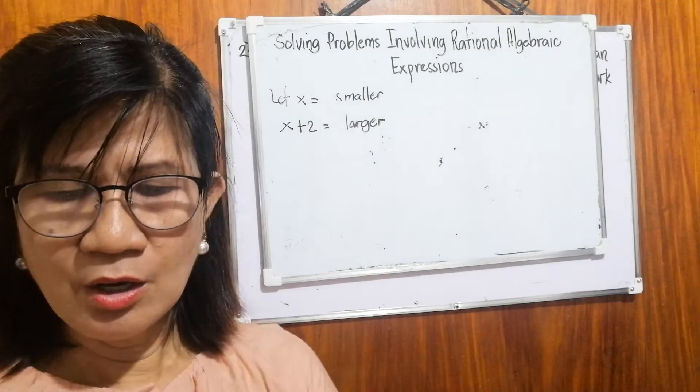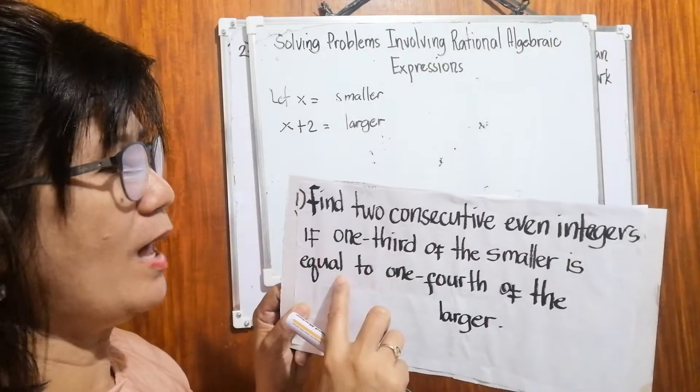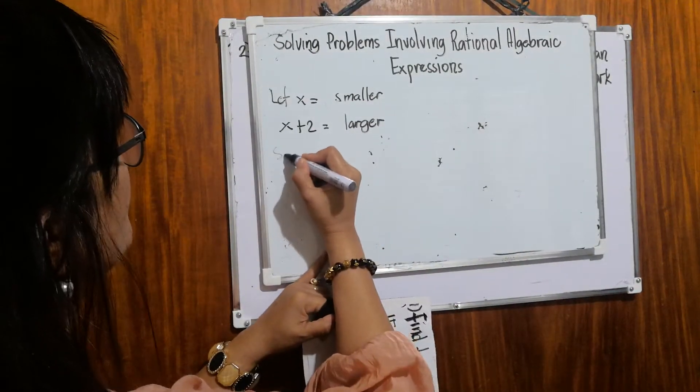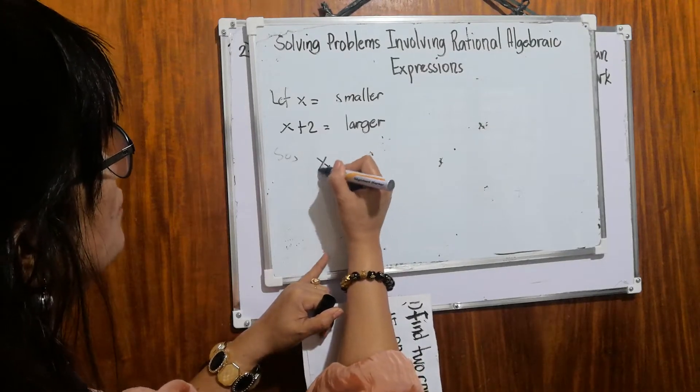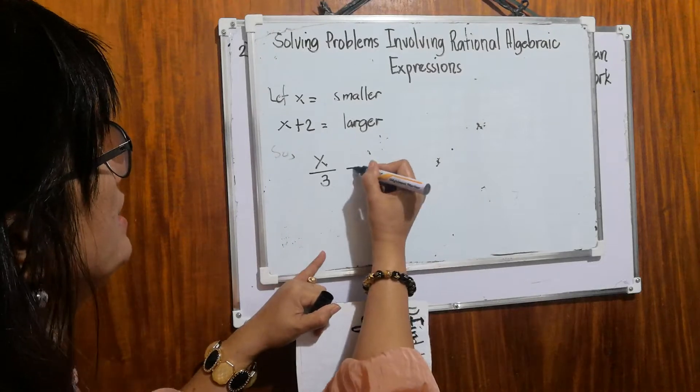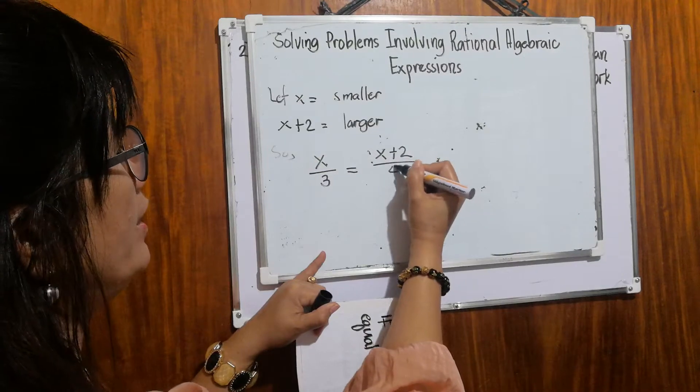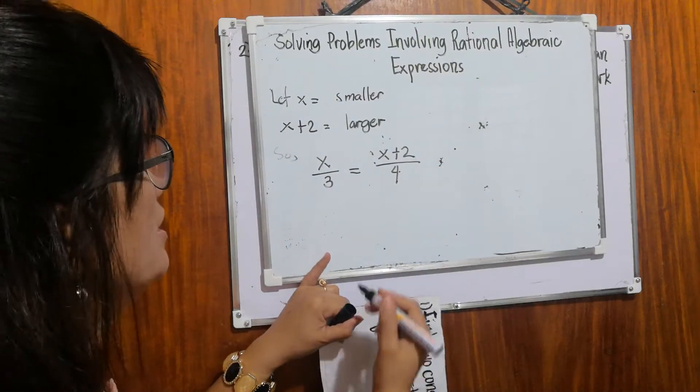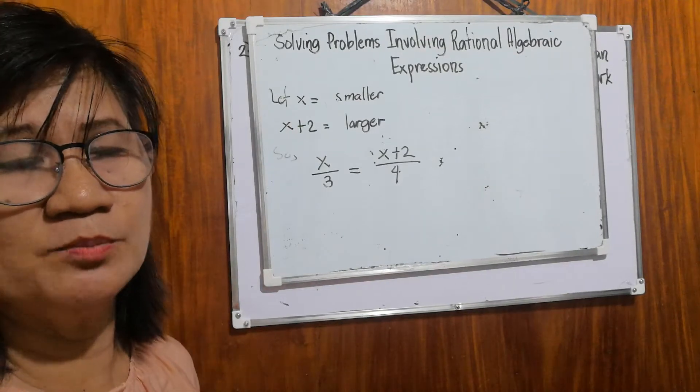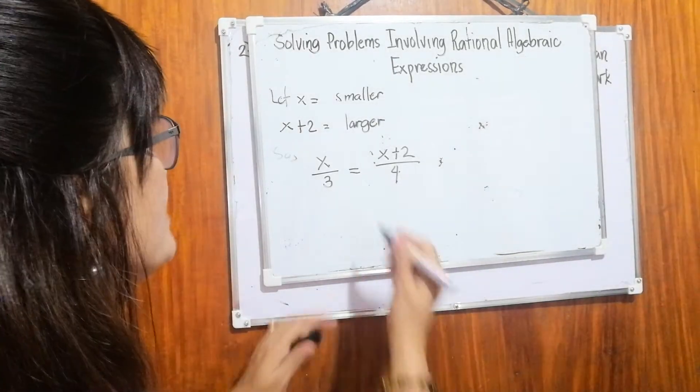So one-third of the smaller is equal to one-fourth of the larger. So it will be x over three, that is one-third of the smaller, is equal to x plus two over four, which is one-fourth of the larger. So to be able to get the value of x or the smaller number, we're going to cross-multiply.